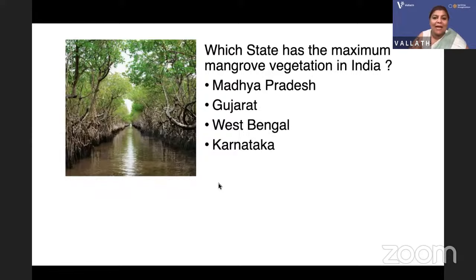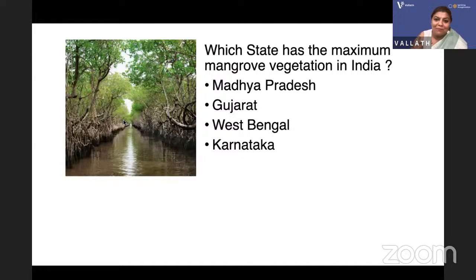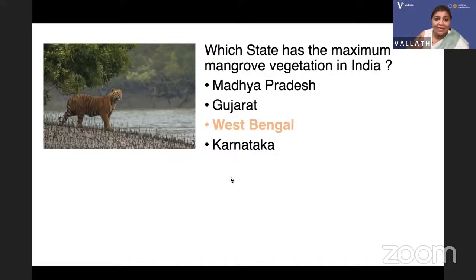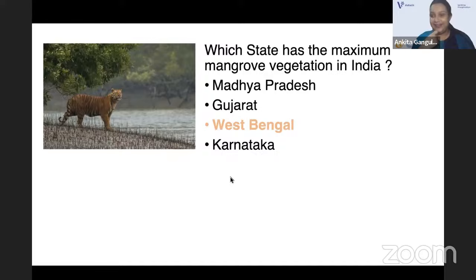Which state has the maximum mangrove vegetation in India? There are some mangroves in Kerala too — for example in Puvar, Thiruvananthapuram, you can take a boat ride through them. But the answer is West Bengal — the Sundarbans. Can you name any work set in the Sundarbans? 'The Hungry Tide' by Amitav Ghosh. Salman Rushdie's 'Midnight's Children' also features Sundarbans. Amitav Ghosh has also written 'Gun Island' (Jungle Nama), featuring the goddess Bon Bibi.